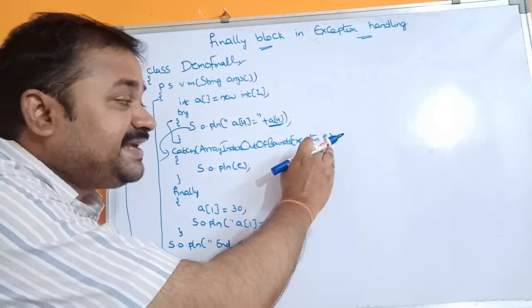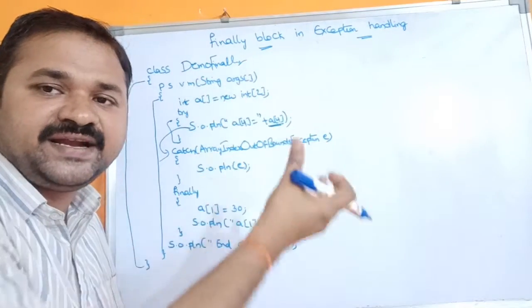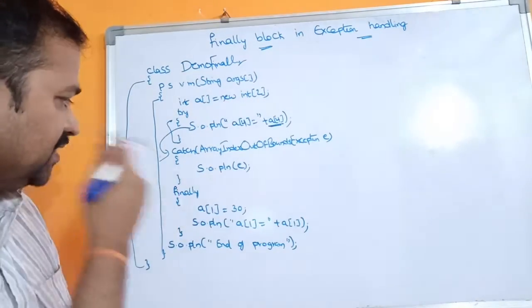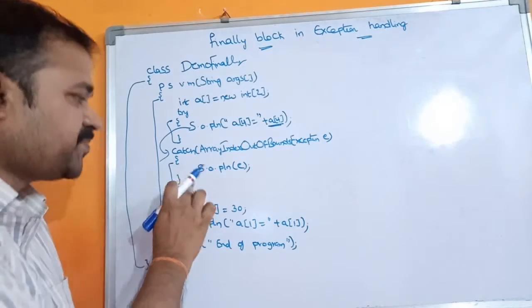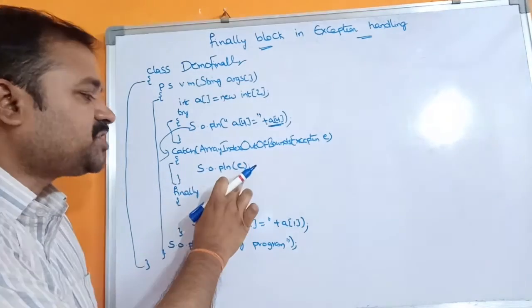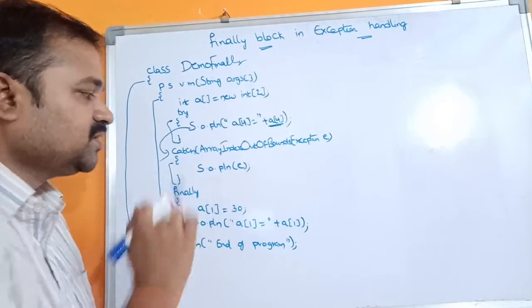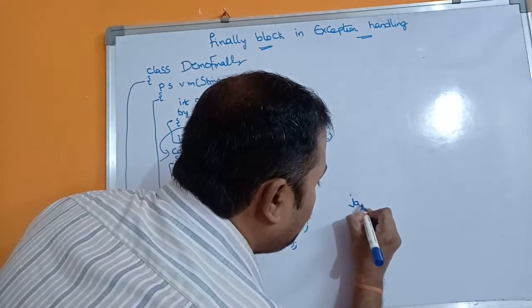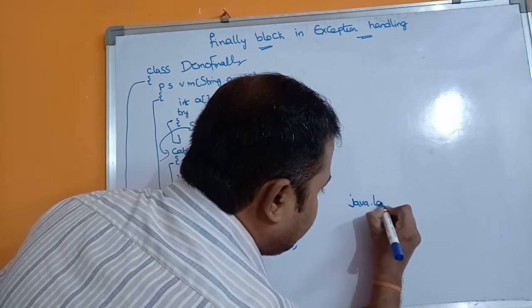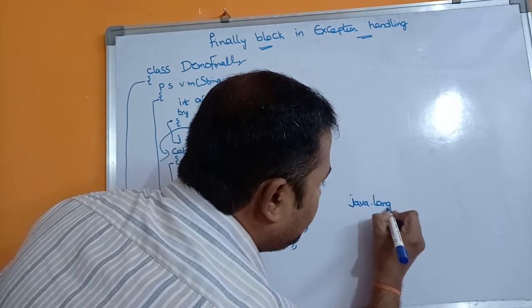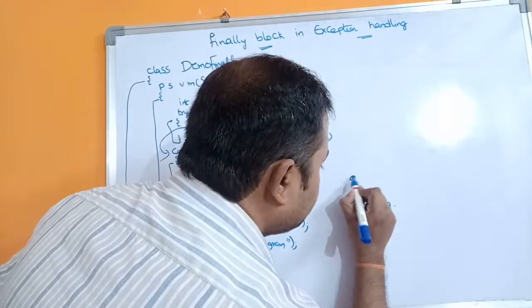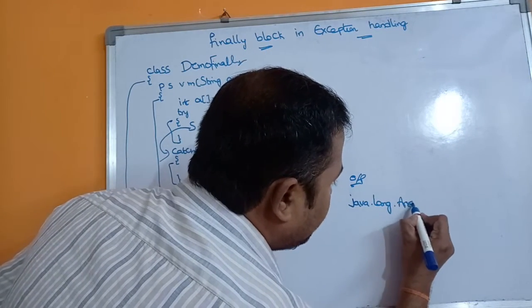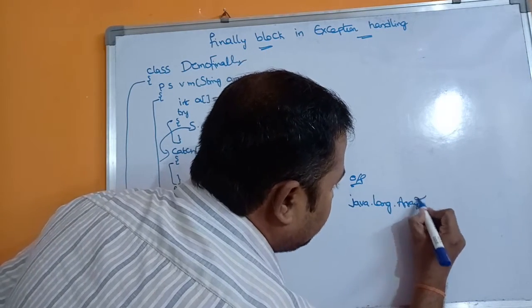The catch block handles the ArrayIndexOutOfBoundsException. The object e contains that exception object. In the catch block we have System.out.println(e). The ArrayIndexOutOfBoundsException class is available in the java.lang package, so the output is java.lang.ArrayIndexOutOfBoundsException.